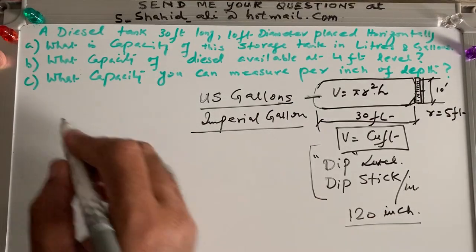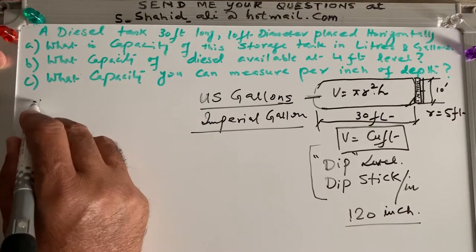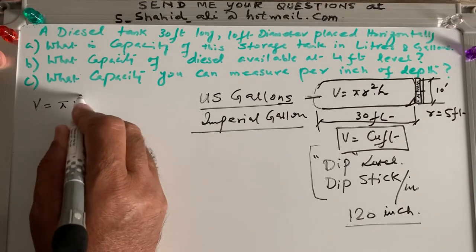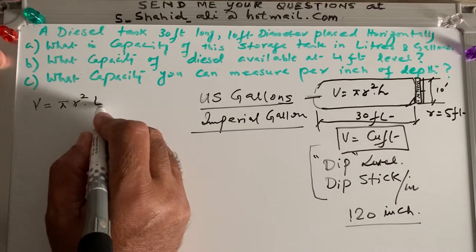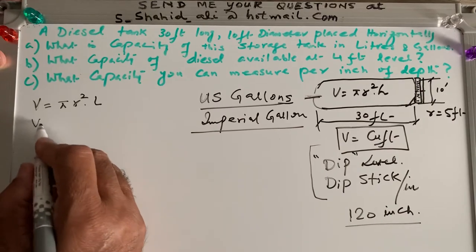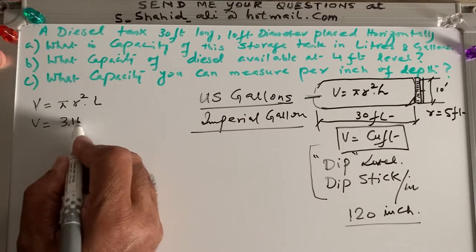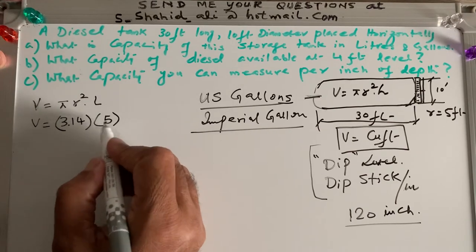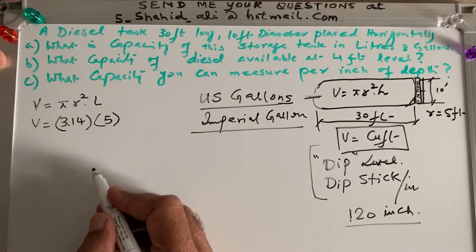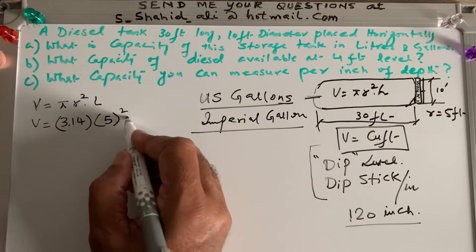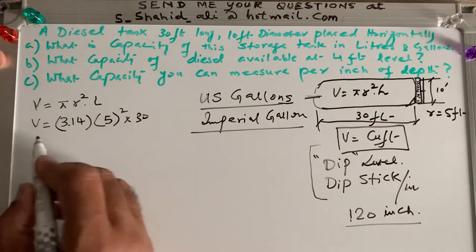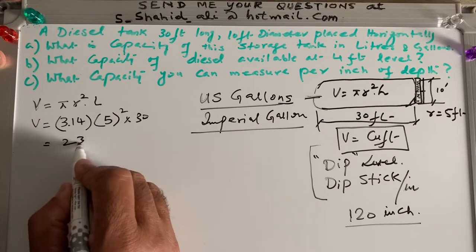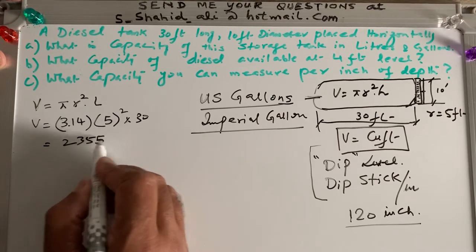So now we start our volume, which will be in cubic feet. So volume equals pi R square H. H is replaced as length because this is placed horizontally. So 3.14 R square. R is 5 because diameter is given, which is 10 feet. So 5 square times L, which is 30 feet. And if I multiply all these, I will be having 2355 cubic feet.